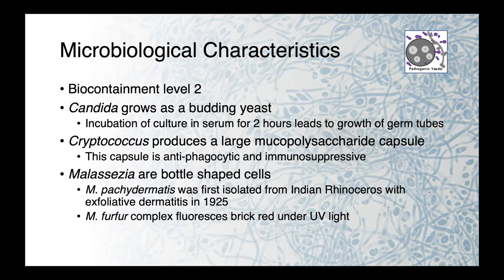Malassezia pachydermatis was first isolated from an Indian rhinoceros with exfoliative dermatitis back in 1925 and is our most commonly encountered species in veterinary medicine. The Malassezia furfur complex, which causes infections in people, fluoresces brick red under UV light.